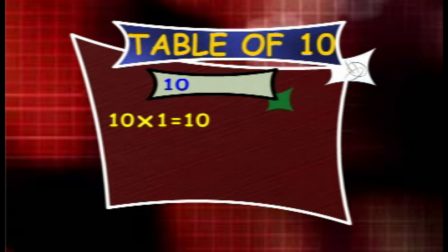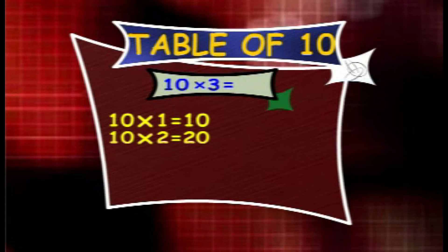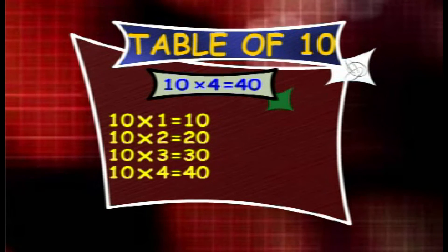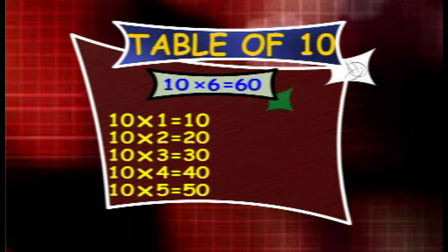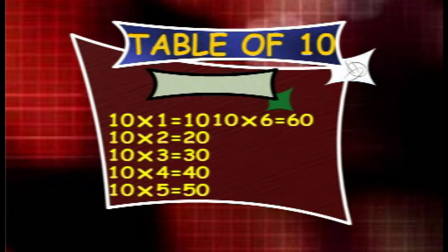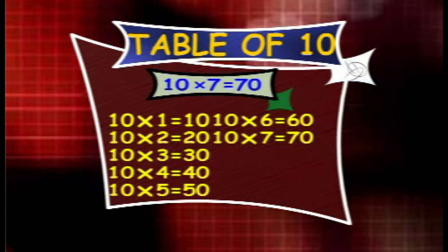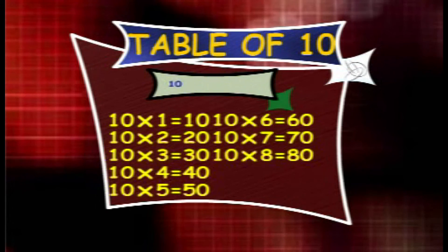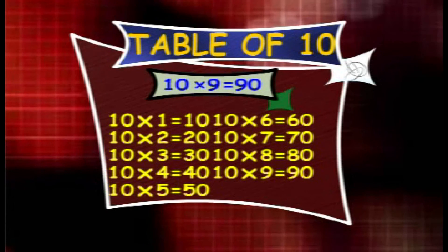Table of 10. 10 1s are 10, 10 2s are 20, 10 3s are 30, 10 4s are 40, 10 5s are 50, 10 6s are 60, 10 7s are 70, 10 8s are 80, 10 9s are 90, 10 10s are 100.